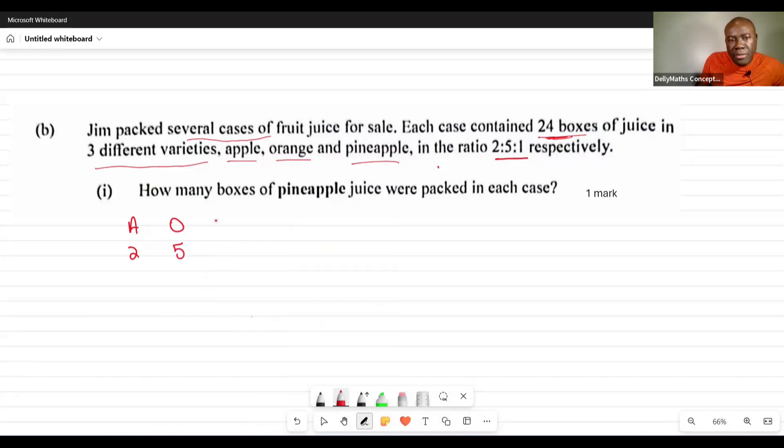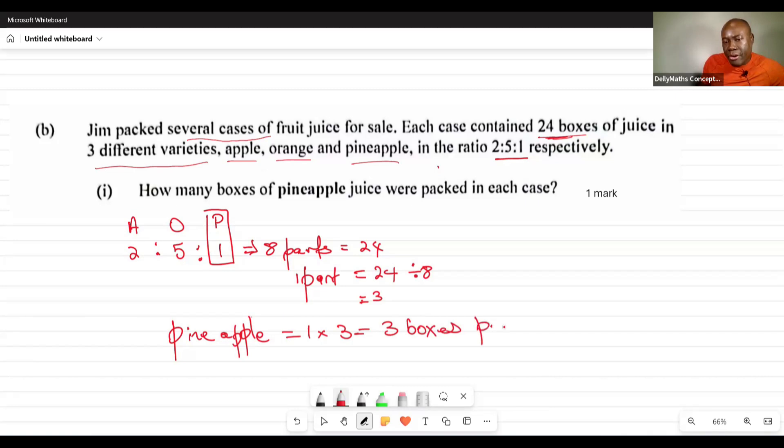We have A for apple (2), O for orange (5), and P for pineapple (1). This gives us a total of 8 parts. Eight parts equals 24 fruit juice, so one part would be 24 divided by 8, which equals 3. For pineapple, one times 3 tells us we had 3 boxes per case.